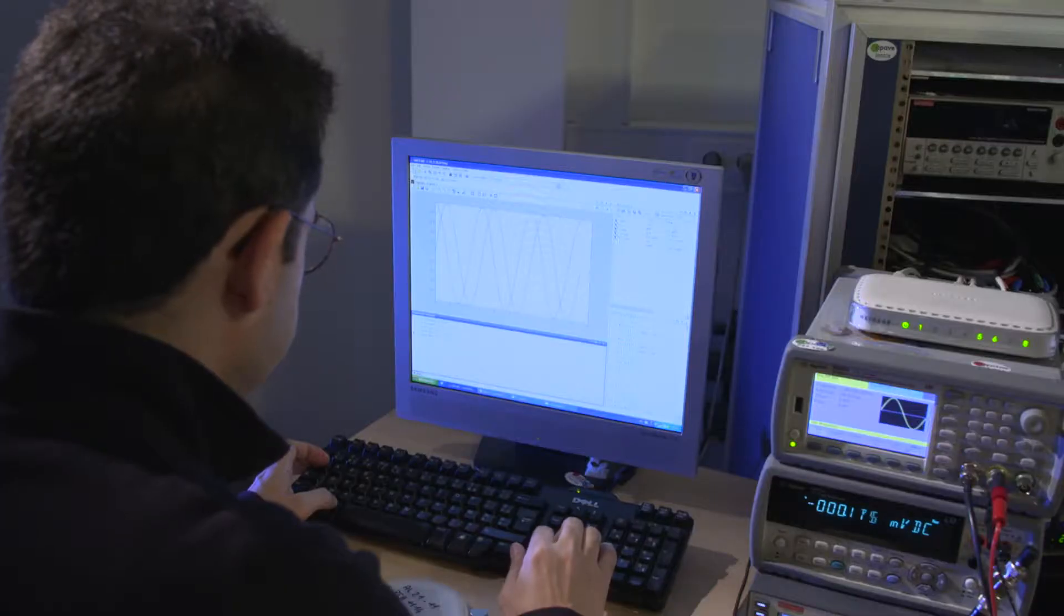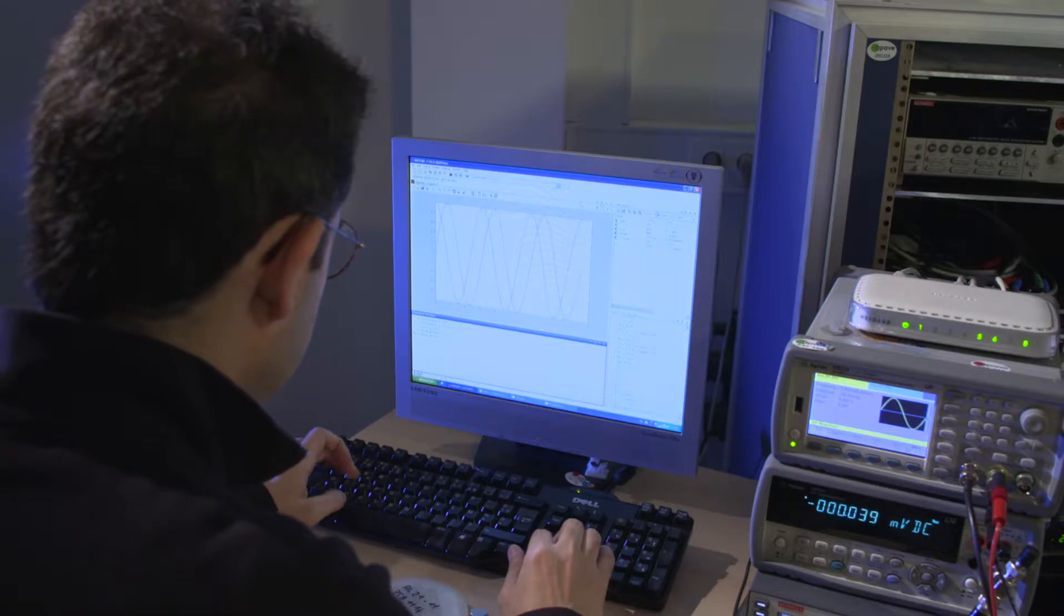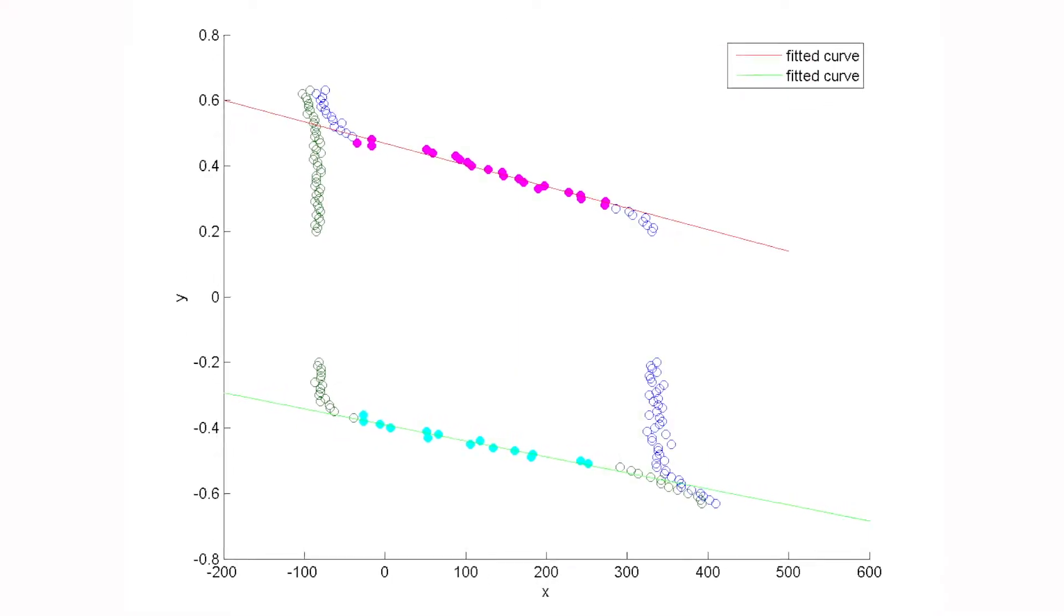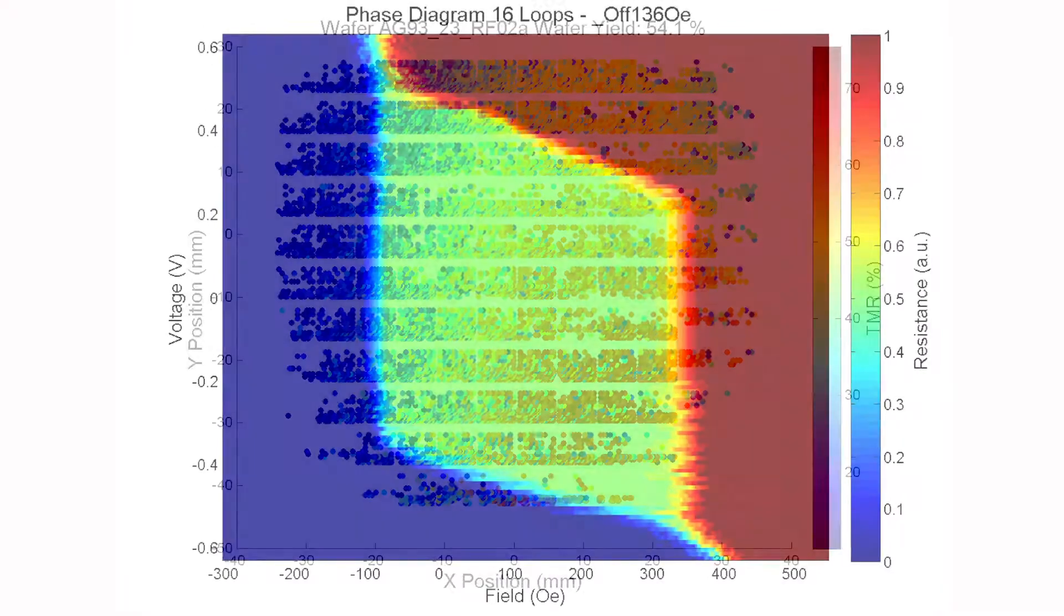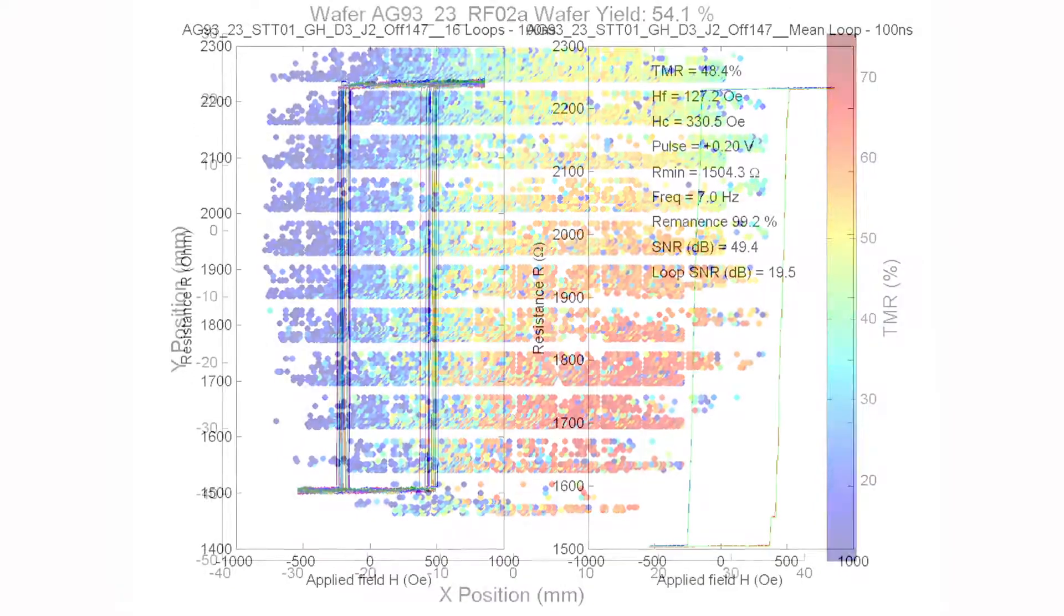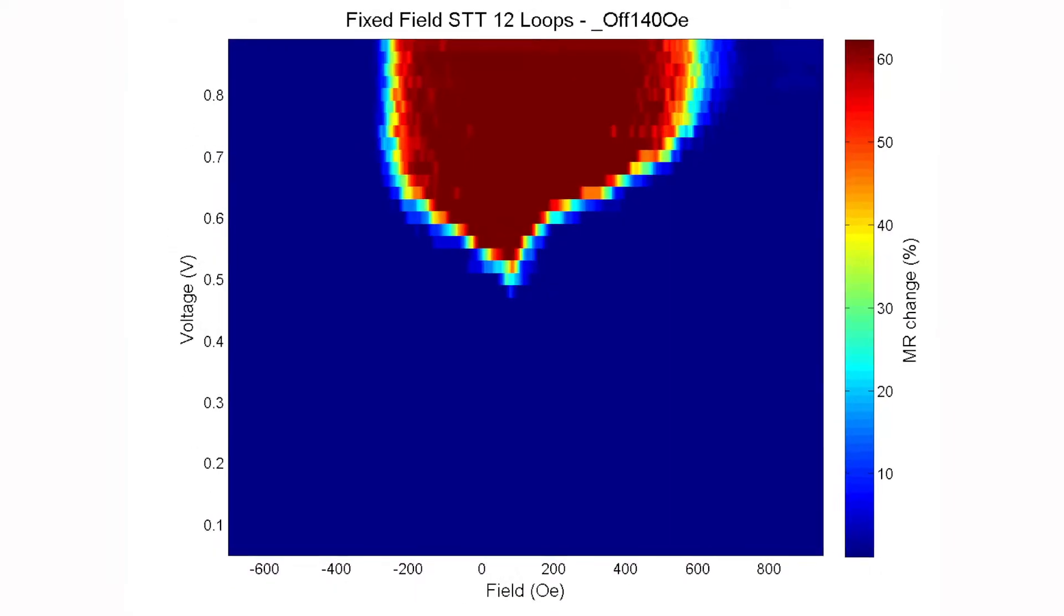The results that you can obtain with the prober are all saved in a database file. It's 26 parameters that are being recorded. The most important are going to be TMR signal, resistance levels, switching fields, and thermal stability.